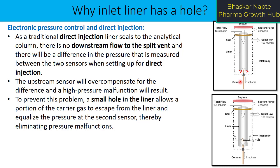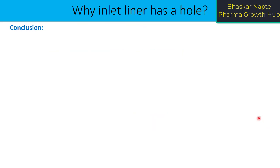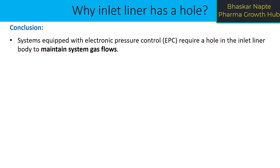Now to prevent this problem, a small hole in the liner allows a portion of the carrier gas to escape from the liner and equalize the pressure at the second sensor, thereby eliminating pressure malfunction. You can see in the second diagram at the bottom there is a small hole in the liner. This small hole allows a portion of the carrier gas along with the sample to escape from the liner and equalize the pressure at the second sensor, thereby eliminating pressure malfunction. So the conclusion is: systems equipped with electronic pressure control or EPC require a hole in the inlet liner body to maintain the system gas flow, especially when using direct injection.